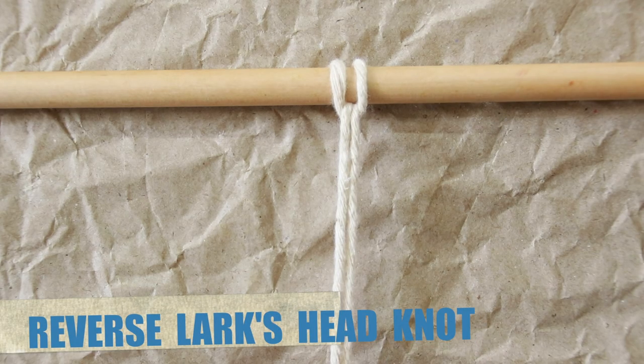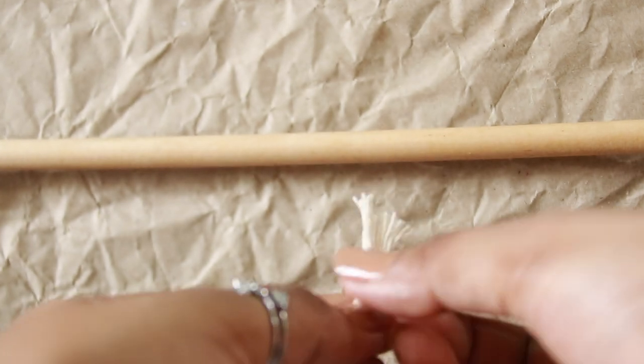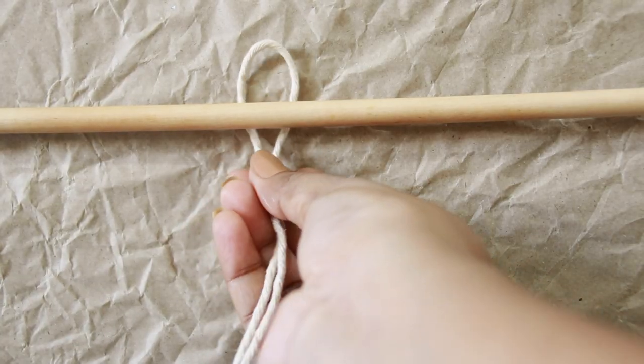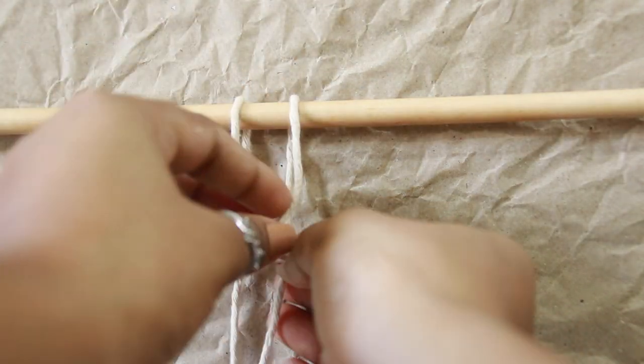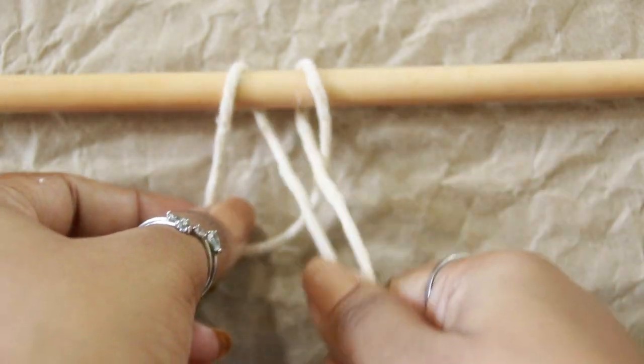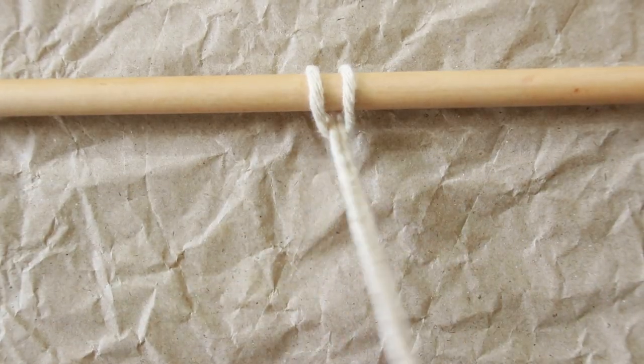For reverse lark's head knot, strand is on the back side. Find your center loop just like before. But this time, we are going underneath and up, fold the loop over the dial in front, pull the tail ends through the loop in front and secure it tightly.